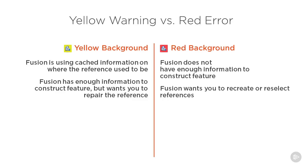If the background is red, that means Fusion 360 can't find or compute that feature — the dependency has failed completely, which sometimes means it's been completely removed from the timeline as well as from the model. There are two different types of deletes: a soft delete inside the model, where it'll still be inside the timeline, and a hard delete from the timeline itself, which would make that sketch red.